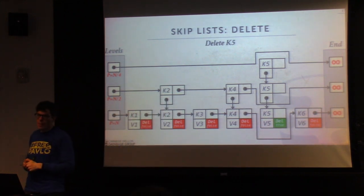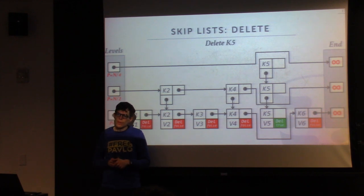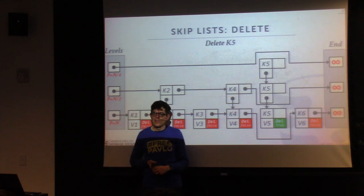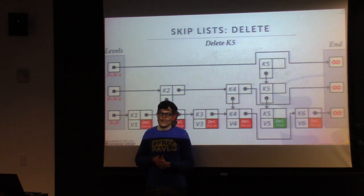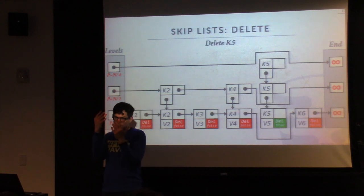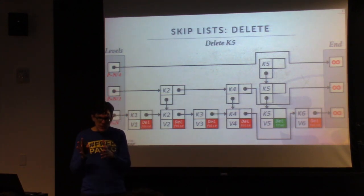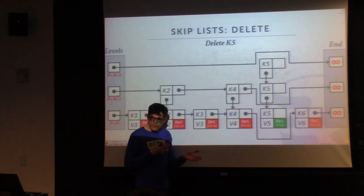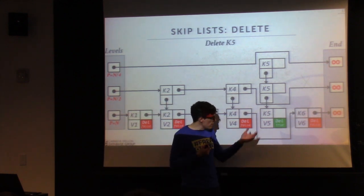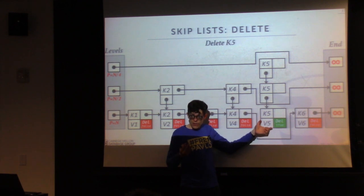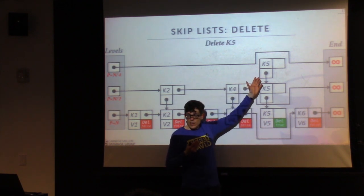Student question: does it matter whether we physically delete the node from top-down or bottom-up? You physically free this memory only when you know no other thread could be referencing it. The issue is if you free a block while a pointer still points to it — when that thread traverses the pointer, it seg-faults. When we do epoch-based garbage collection, we'll see why that cannot happen. So the answer is it does not matter, as long as you do garbage collection correctly.